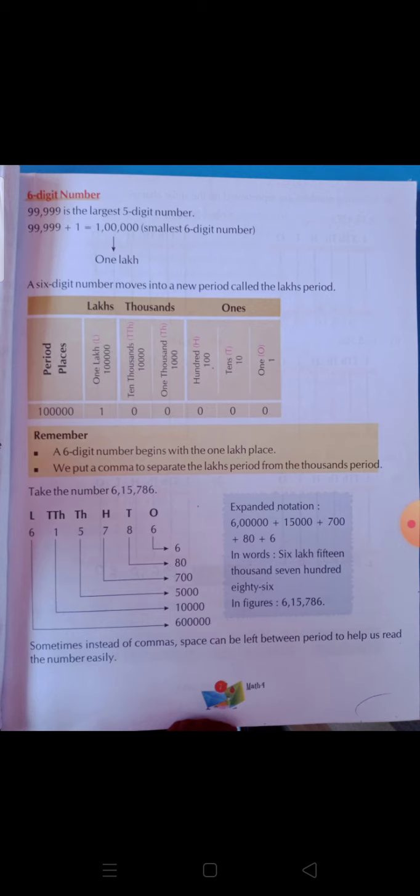Here we get 99,999 as the greatest 5-digit number. To get a 6-digit number, we add 1. If we add 1 to 99,999, we will get 1 lakh. And 1 lakh is the smallest 6-digit number.